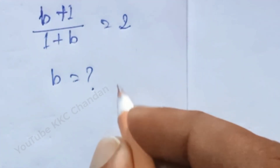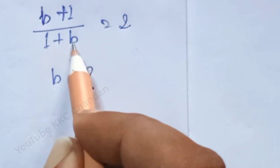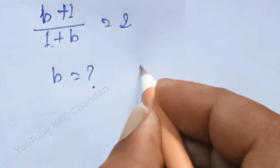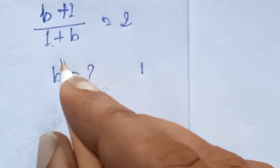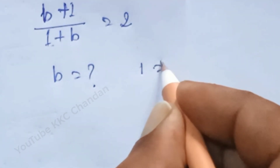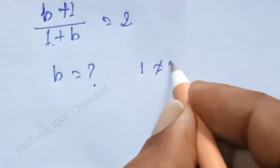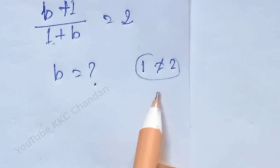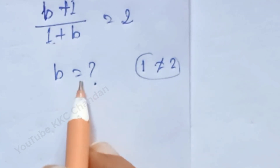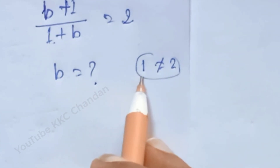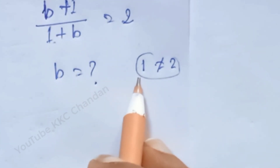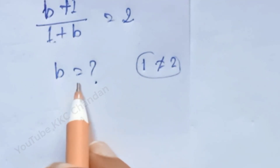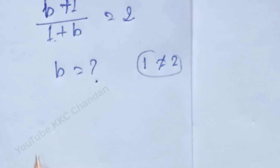b plus 1 divided by b plus 1 — that will be cancelled. See here, the 1 and 1 cancel, leaving 1 is equal to 2. But this does not equal 2. So this simple cancellation is not the correct way to solve this problem — this is not the correct solution for this simplification.